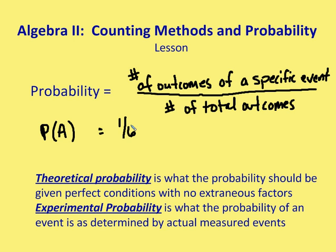Now there's a distinction between theoretical and experimental probability. Theoretical probability is what the probability should be given the perfect conditions with no extraneous factors. The probability that I should roll a one should be one out of six. But in some cases, that doesn't always happen. Experimental probability is based on results that have actually been measured. So let's say I roll a die six times, and I end up getting a one three of those six times. Then based on the experimental probability, the probability of rolling a one would be three out of six, or one-half.